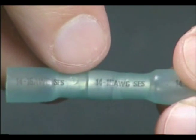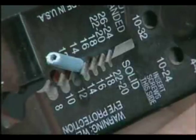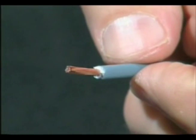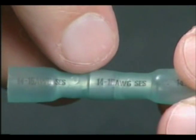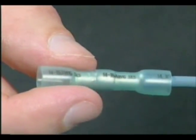To install sealed crimp and solder butt connectors, strip the wire insulation 3/8 of an inch. Select the proper sized connector. Insert the wire into the connector.